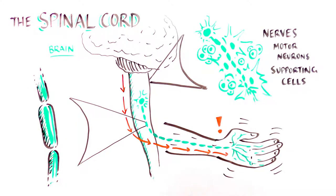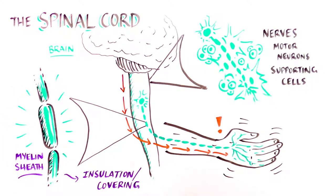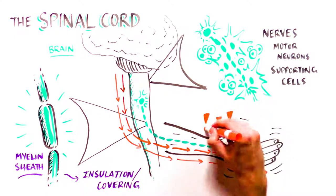Axons are protected by a material called myelin, which you can think of as the insulation around the wire. This insulation helps the nerve signals move rapidly down the spinal cord to the muscle to allow for movement.